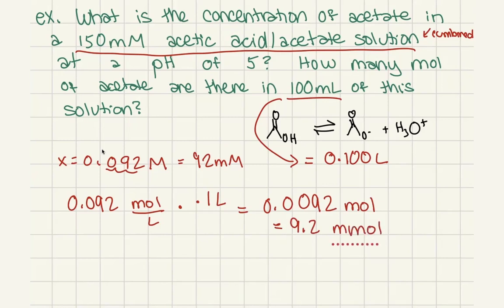But that would be how many moles of the acetate that we actually have in the solution, because we only have that 0.1 liters. If we had a liter, we would have 92 millimoles or 0.092 moles.